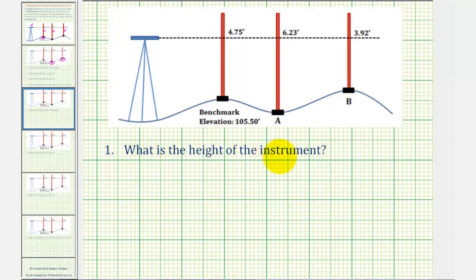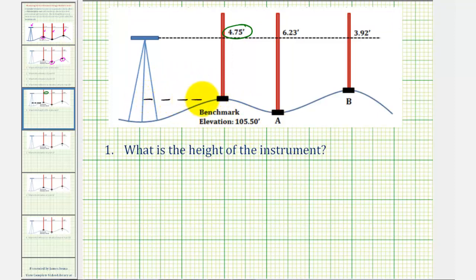Let's start by determining the height of the instrument, which we can think of as the elevation of this builder's level, or the builder's level line of sight. To do this, we'll be using the benchmark as well as this first reading. If the benchmark elevation is 105.5 feet, that means the elevation of the builder's level to this point here would also be 105.5 feet. So if we take the benchmark and add the first reading — the distance from the line of sight to the benchmark — this will give us the height of the instrument.